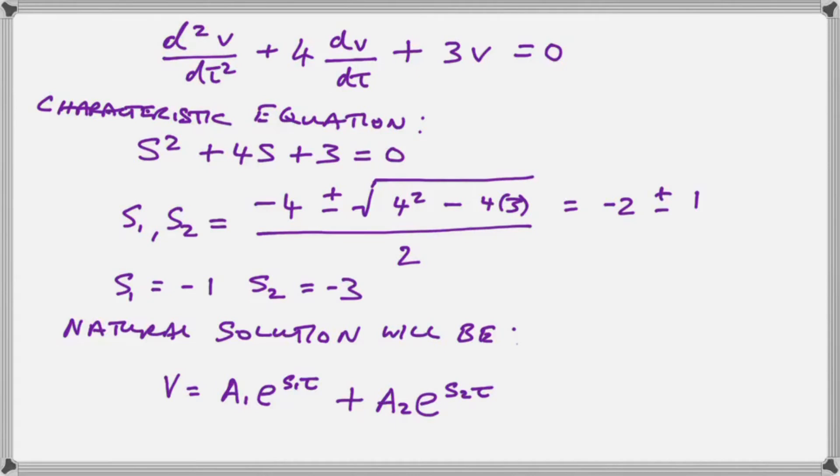And when we have real roots that means that our circuit is overdamped. And the solution for the overdamped circuit is just two exponentials added together as shown.